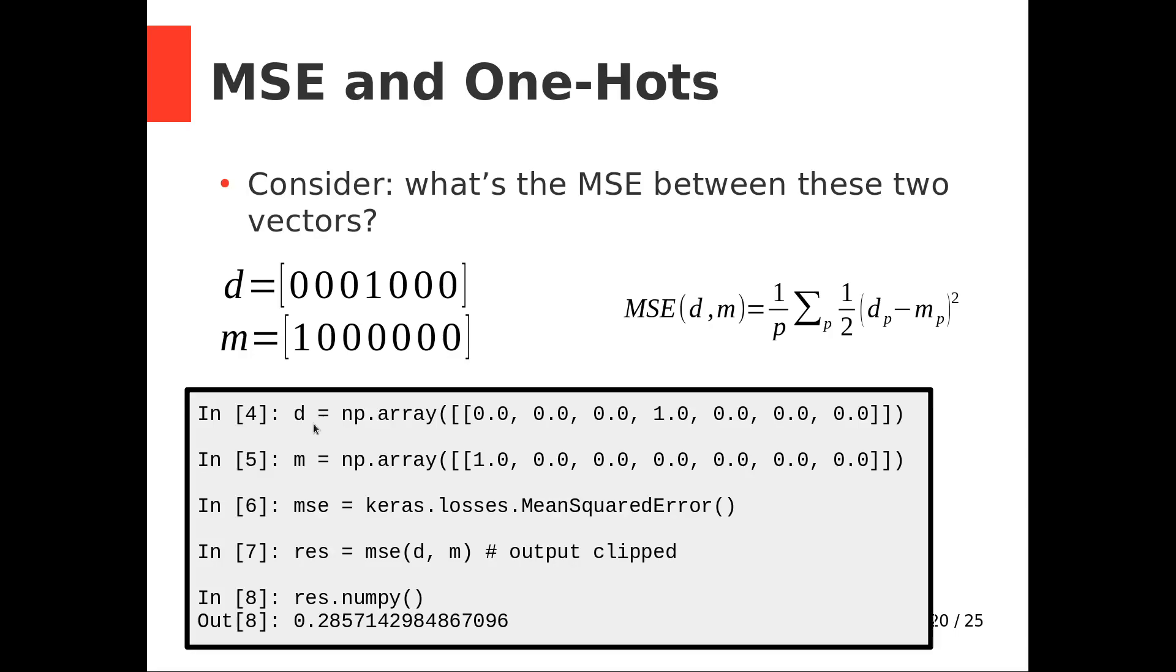I have created a Keras.losses.mean squared error, and it turns out that thing is callable. When I call this, we get a bunch of diagnostic TensorFlow output, because TensorFlow has to build a session and a graph, but we don't care. And I get a result, and when I convert the result to NumPy so it's easy to read, I get 0.28 something.